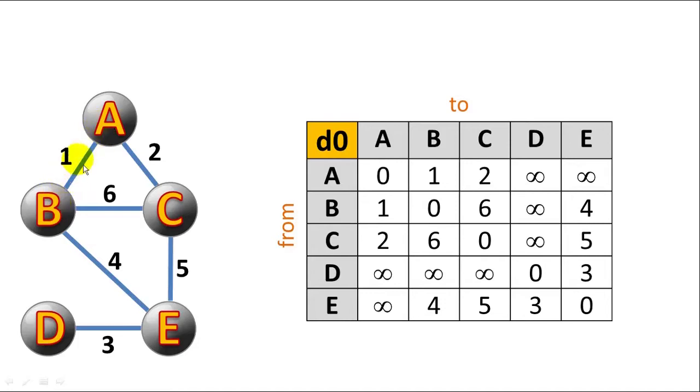So A to B has an edge of one. So we put a one in both from A to B, and also from B to A. And you can see that A to C has an edge weight of two. And so we put a two in from A to C, and also from C to A, because this is an undirected graph.